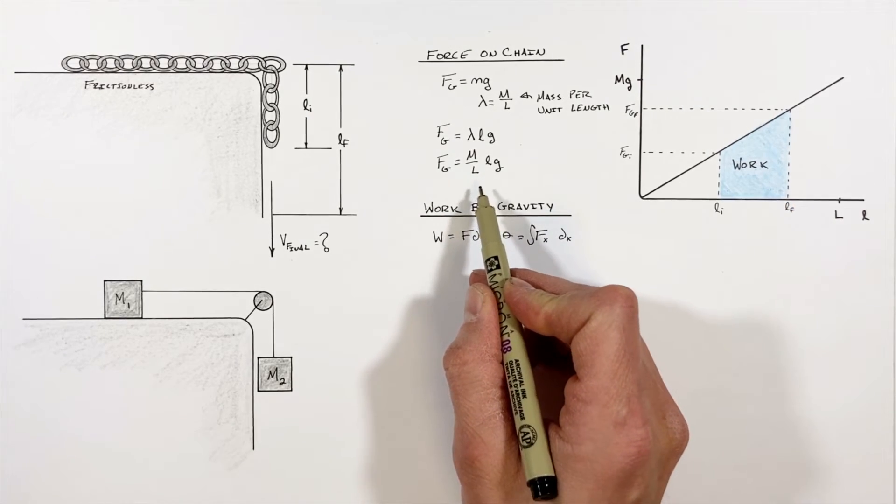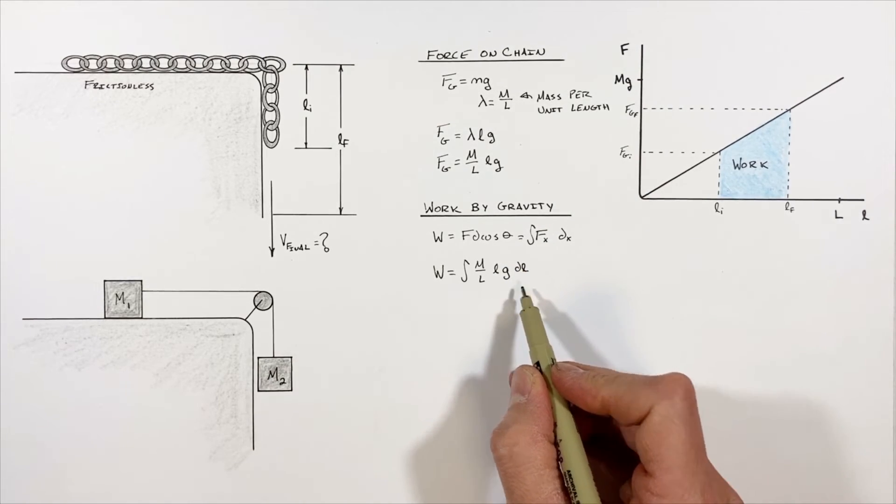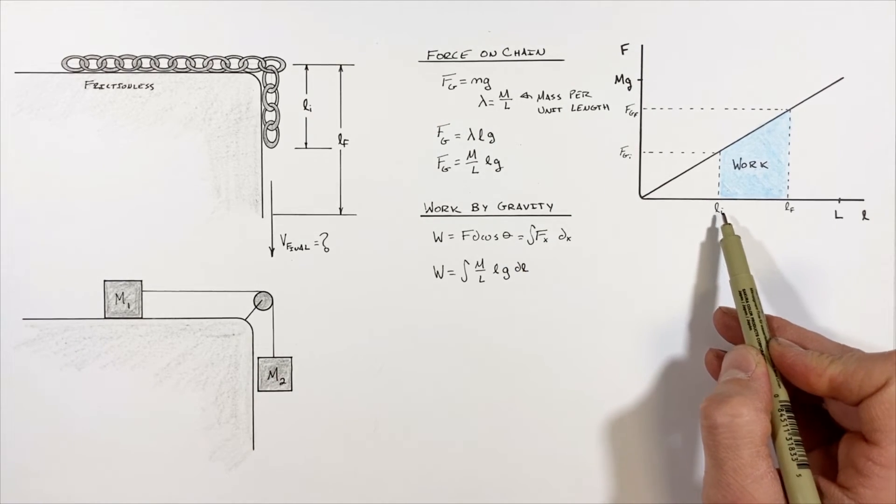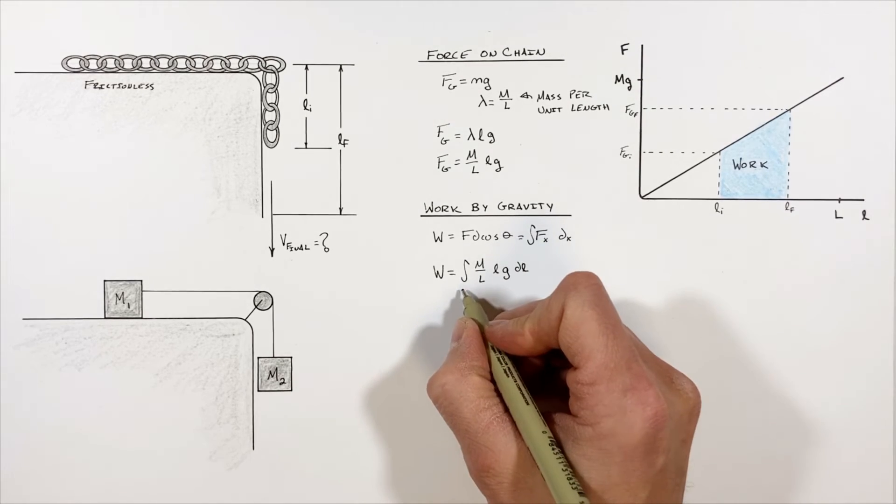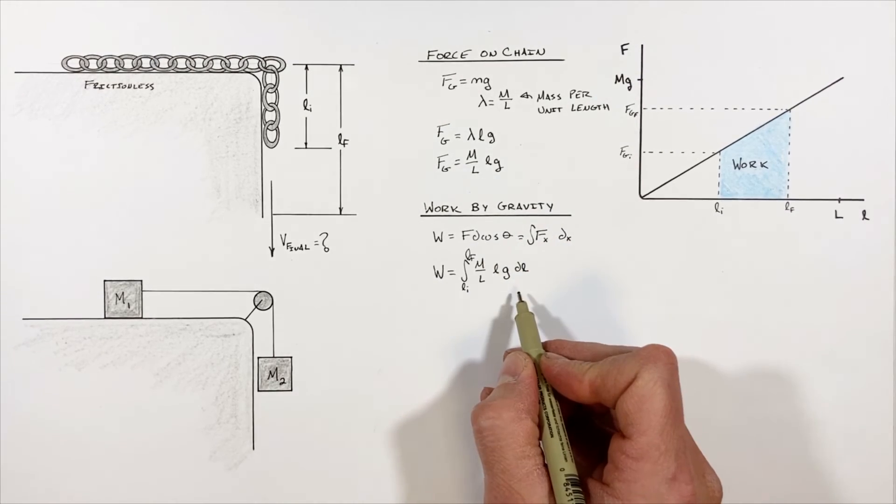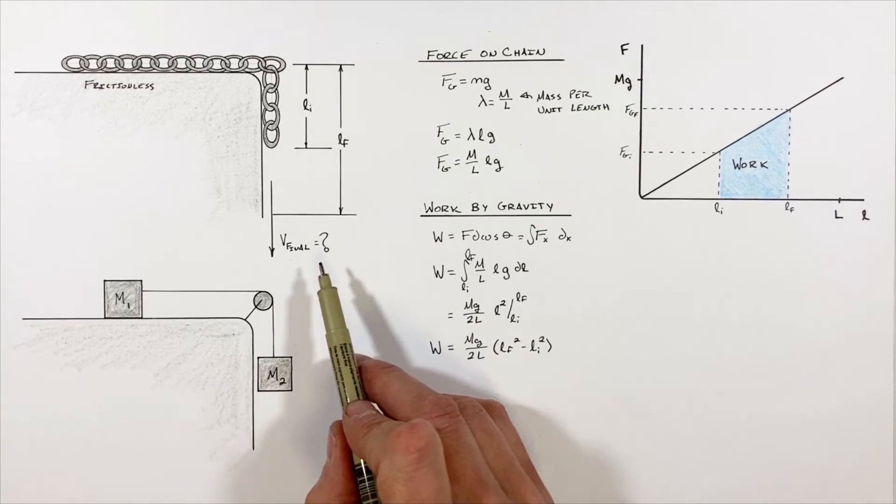So integrating this function with respect to position, we'll be able to find the total work done. Realize we're going to have to look at the work from some initial length to some final length, that means we're looking at the definite integral here. So evaluating this integral, we get the total work done is given by this function.